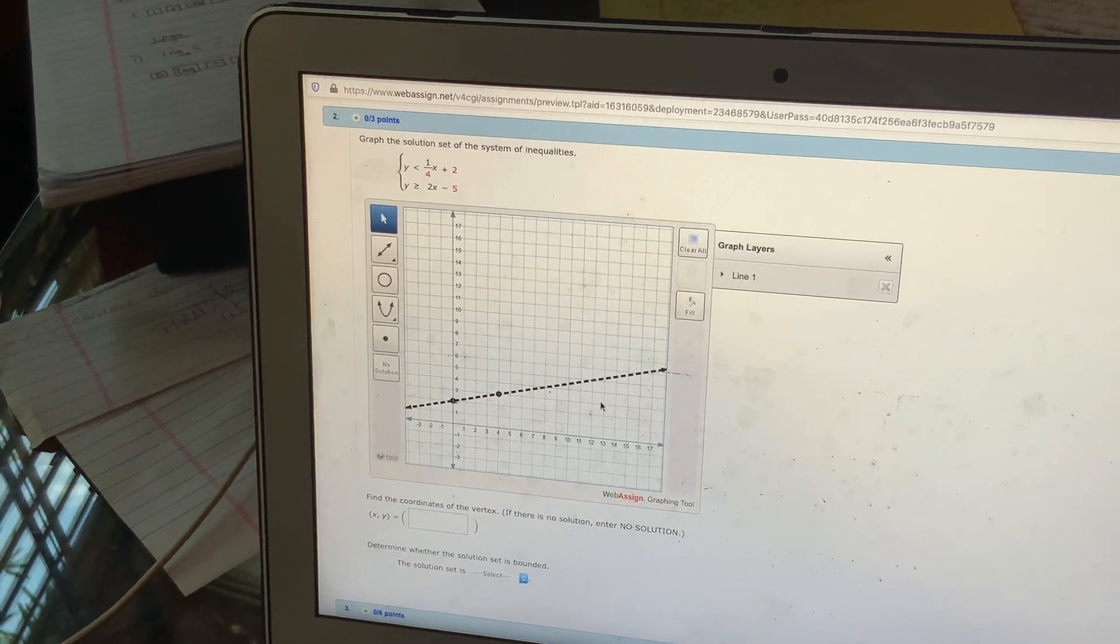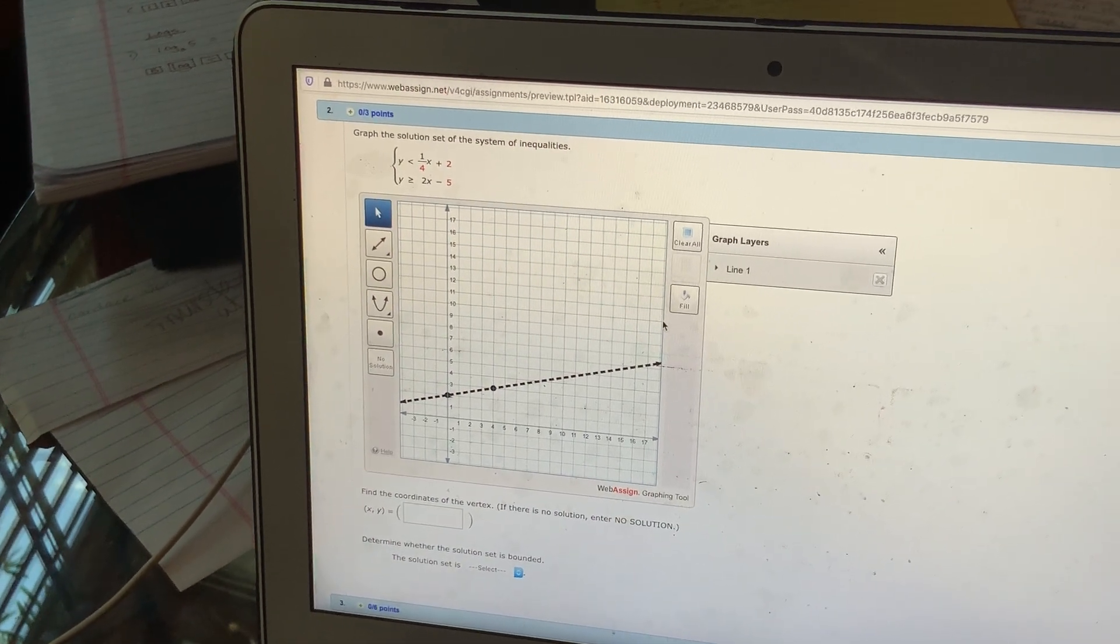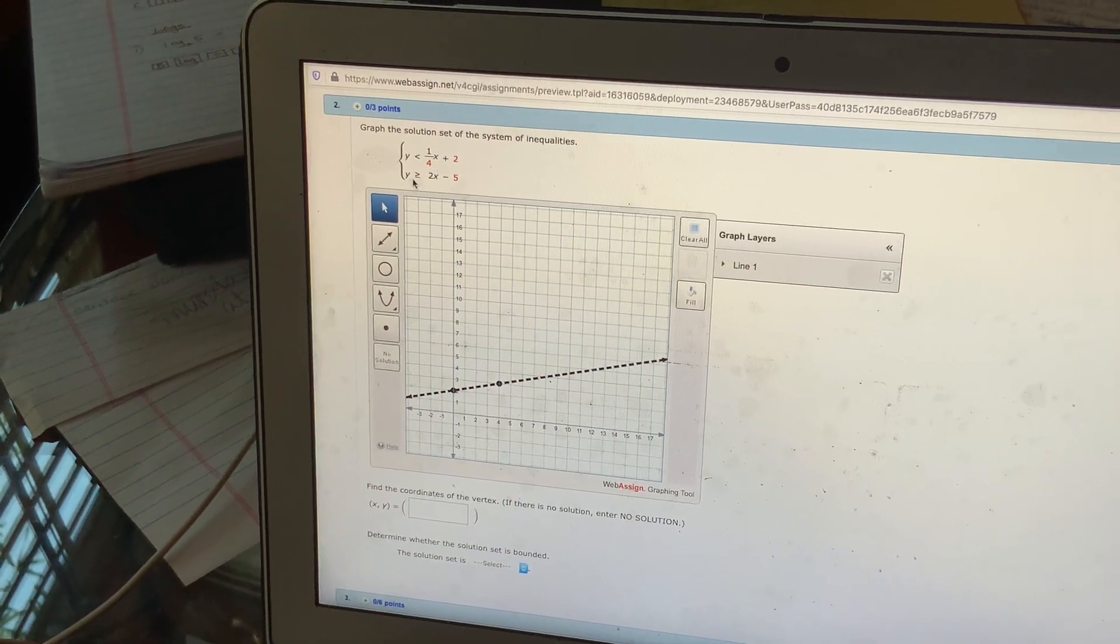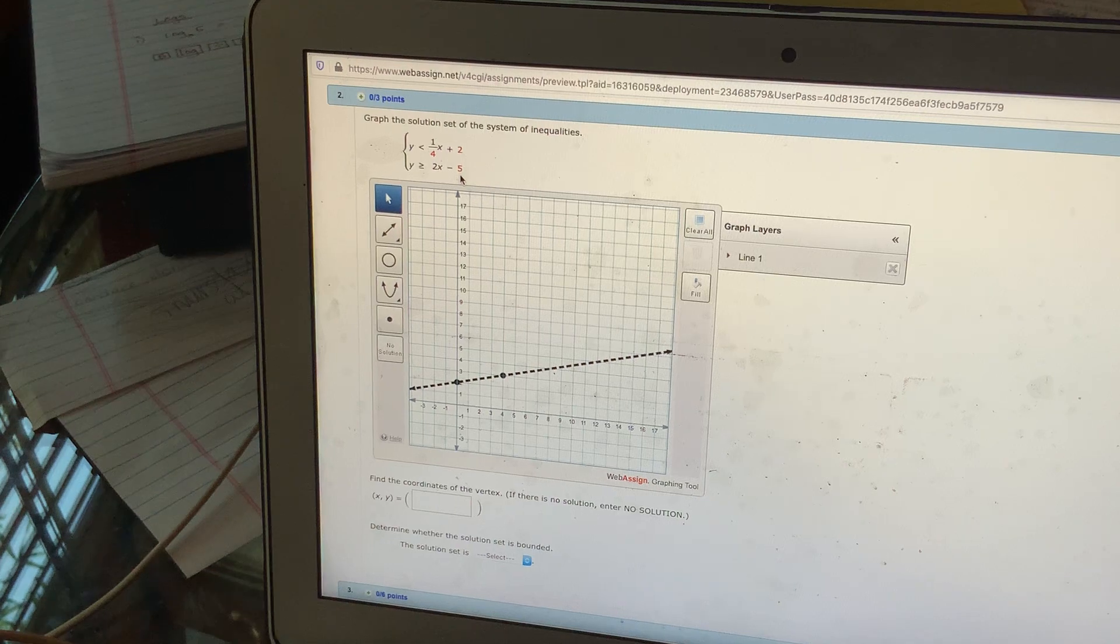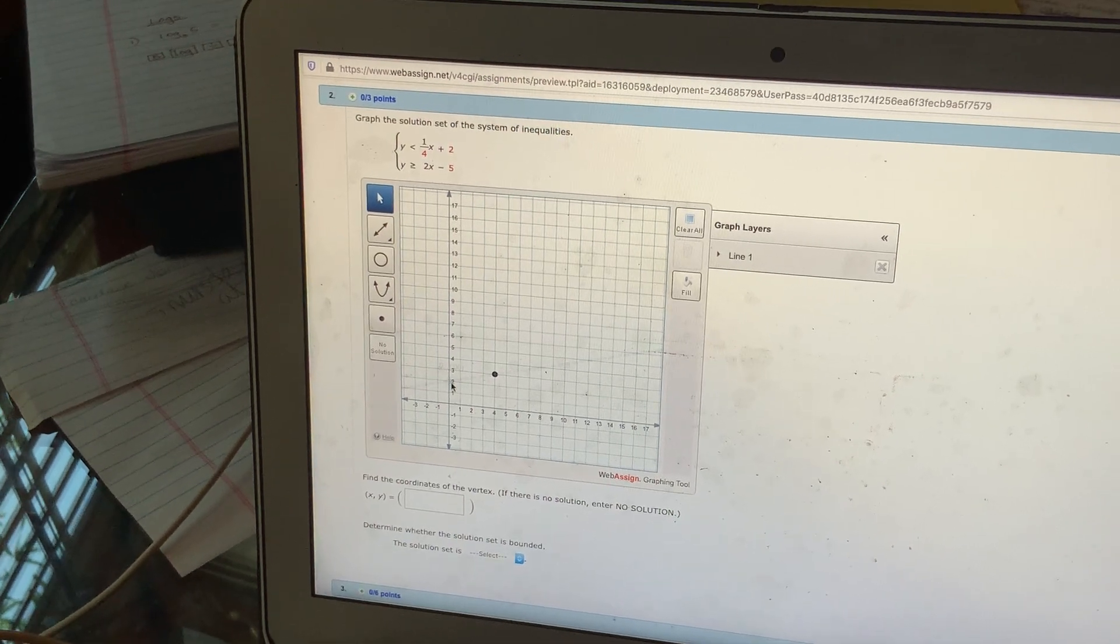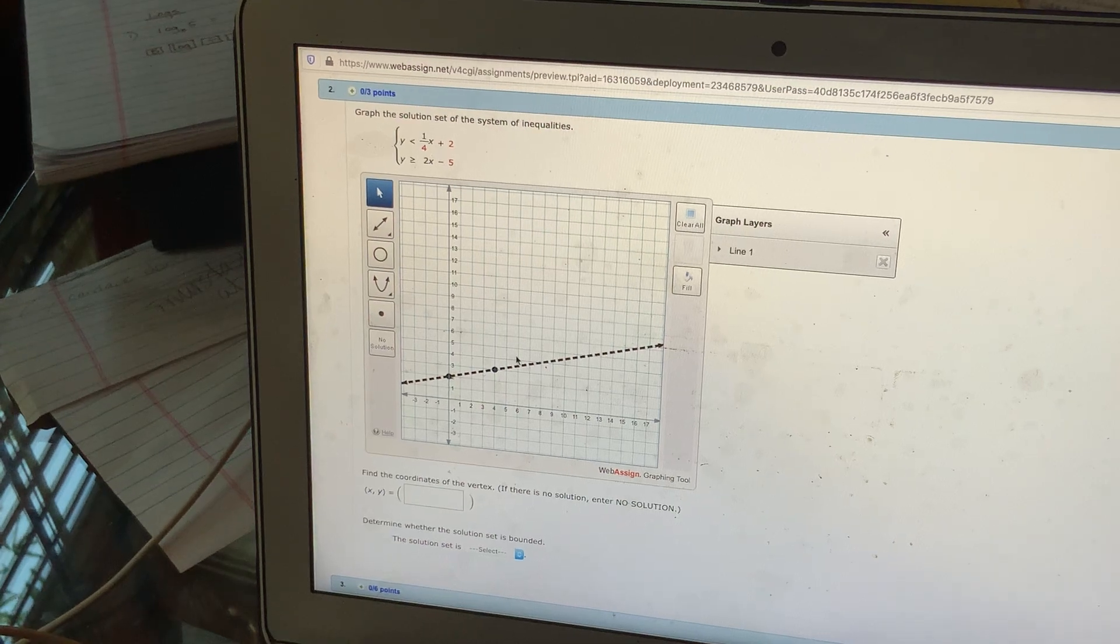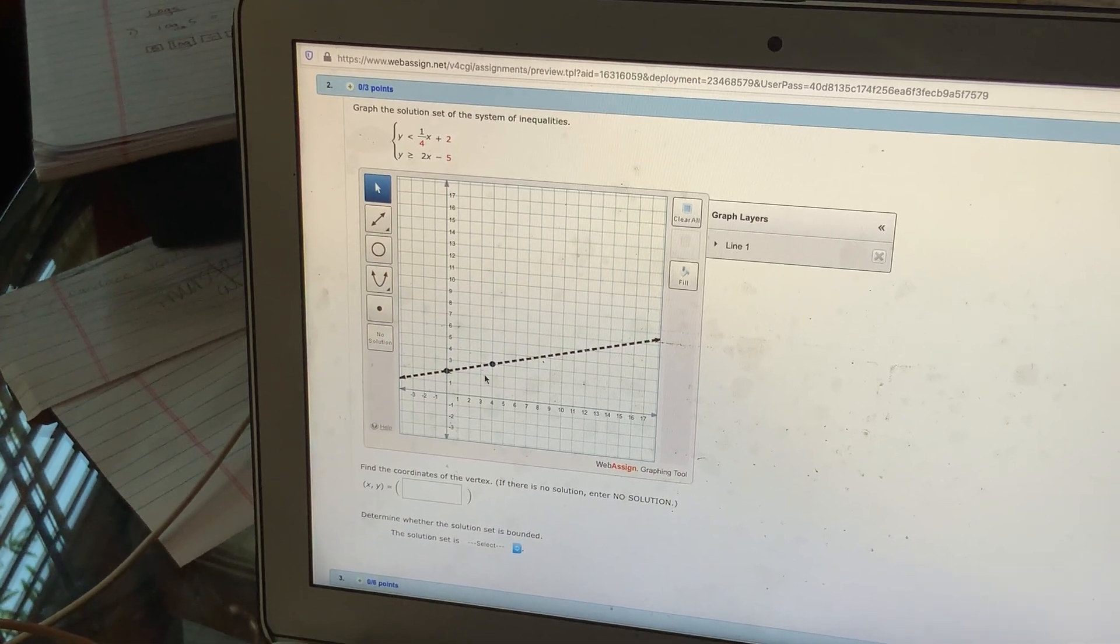Now, you're not going to fill in anything until you're finished. So let's go ahead and graph this other line. I've got y is greater than or equal to 2x minus 5. Now this is one of these weird ones where they don't give you the y-intercept on WebAssign, so you're just going to have to pick two more points.